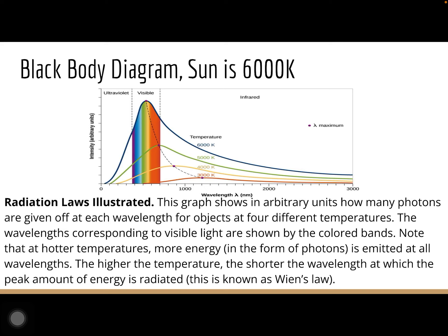Okay, so the blackbody diagram — the sun is 6,000 Kelvin. This diagram illustrates blackbody radiation, similar to what your worksheet looks like. It's a graph that shows, in arbitrary units, how many photons are given off at each wavelength for an object at four different temperatures. The wavelengths corresponding to visible light are shown by the colored bands. At hotter temperatures, more energy in the form of photons is emitted at all wavelengths, and the higher the temperature, the shorter the wavelength at which the peak amount of energy is radiated.